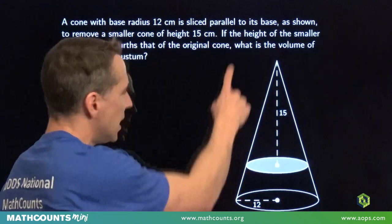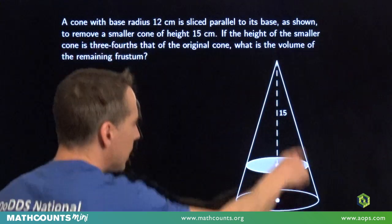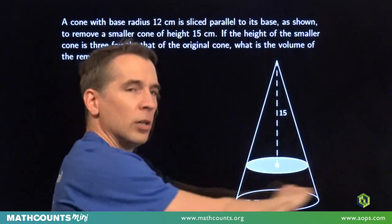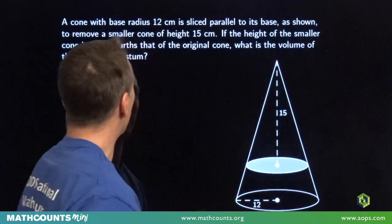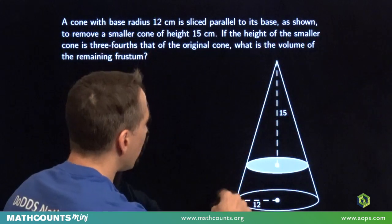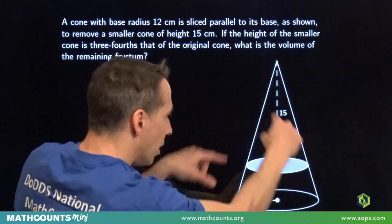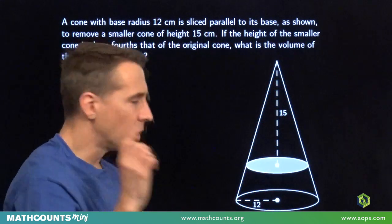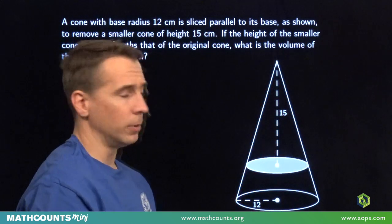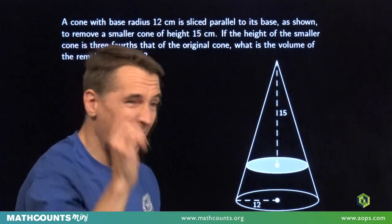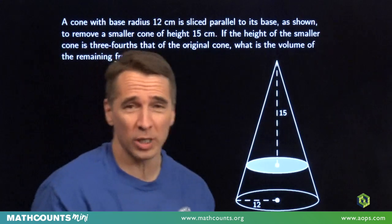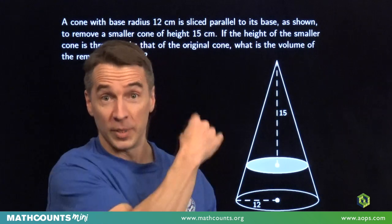In this problem we have a big cone with radius 12. It's sliced parallel to its base, and we remove the smaller cone on top, leaving the piece on the bottom. The height of the smaller cone is 15. Our goal is to find the volume of the piece left behind. This piece has a name — it's called a frustum. Say it with me: frustum. I didn't make that word up; it's really a word.